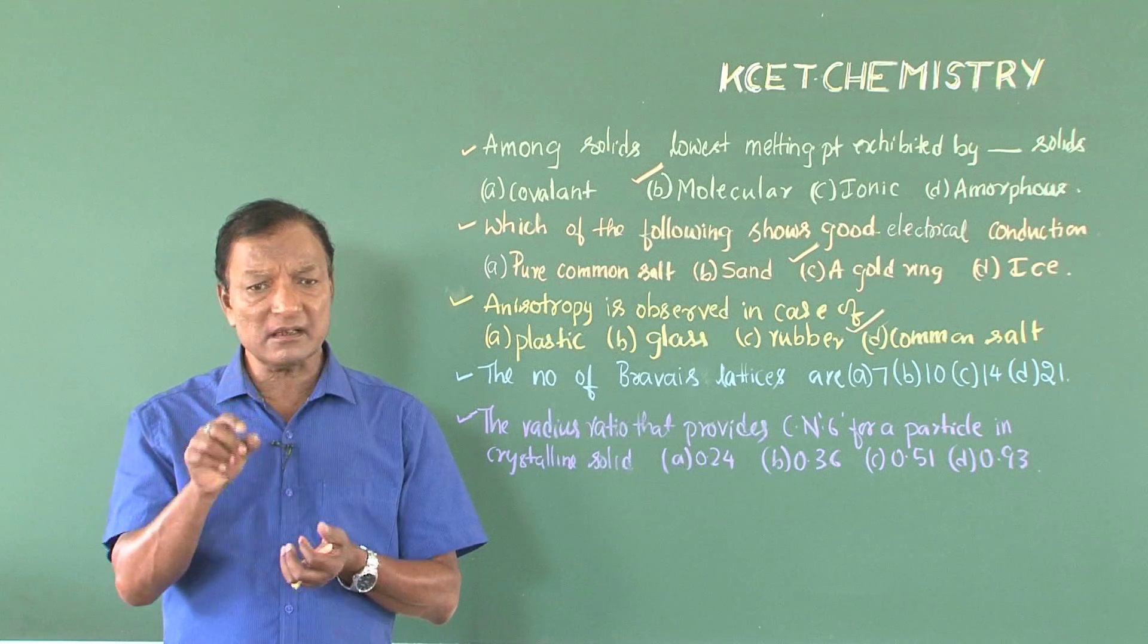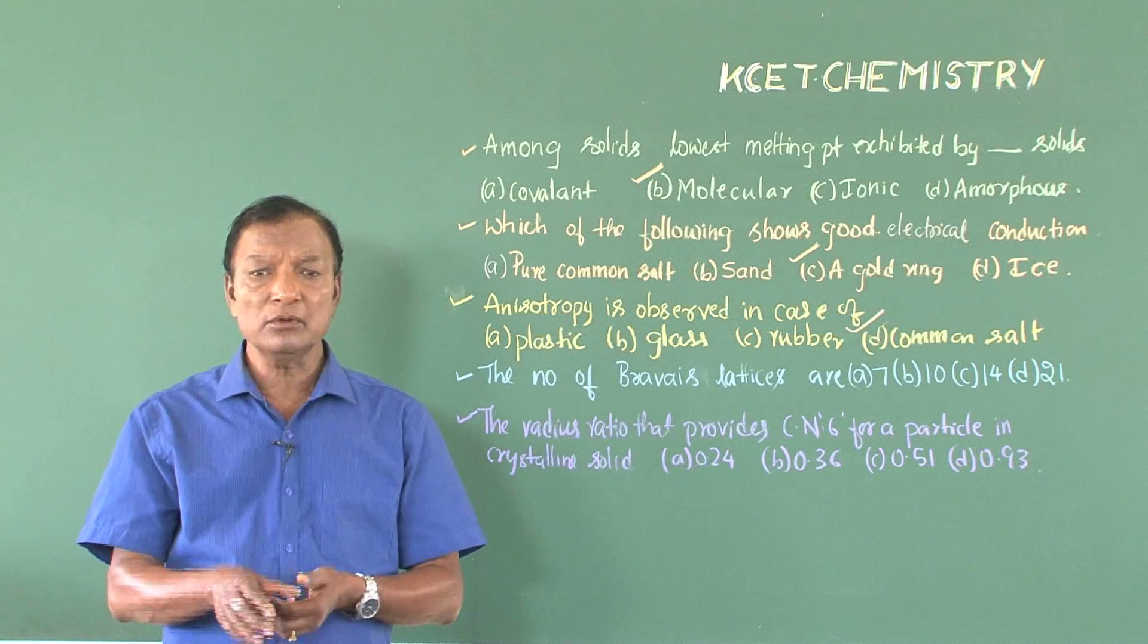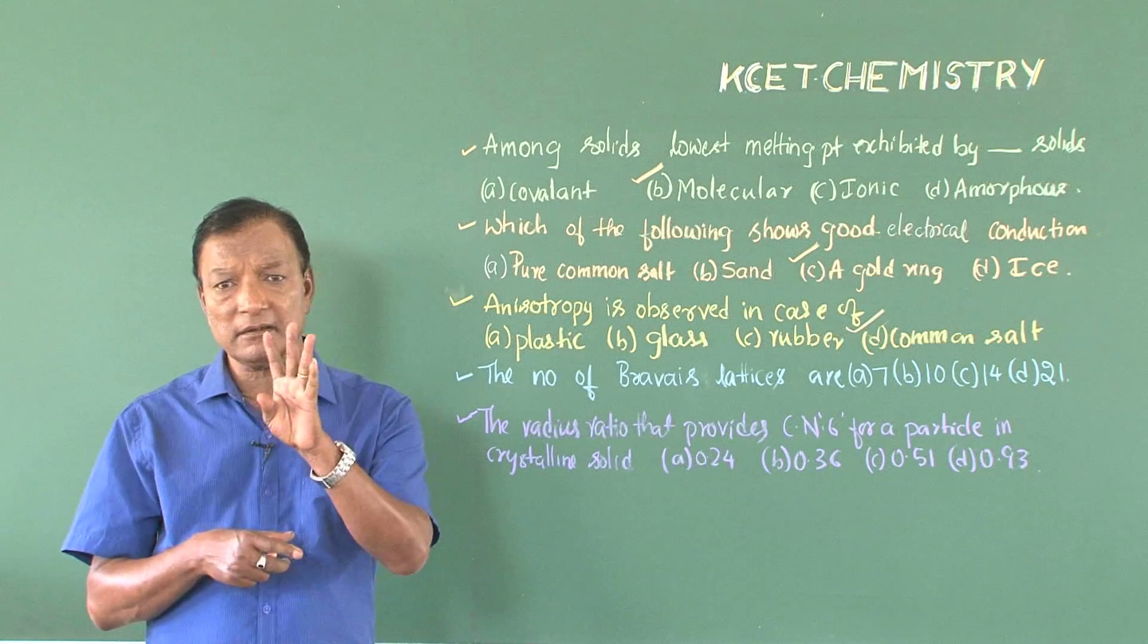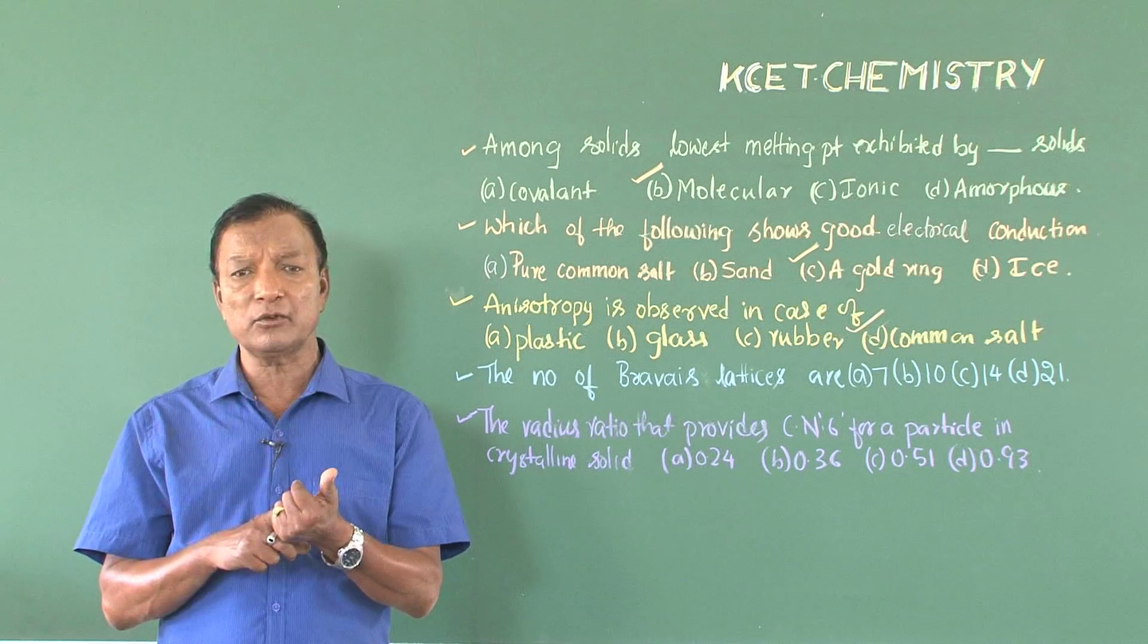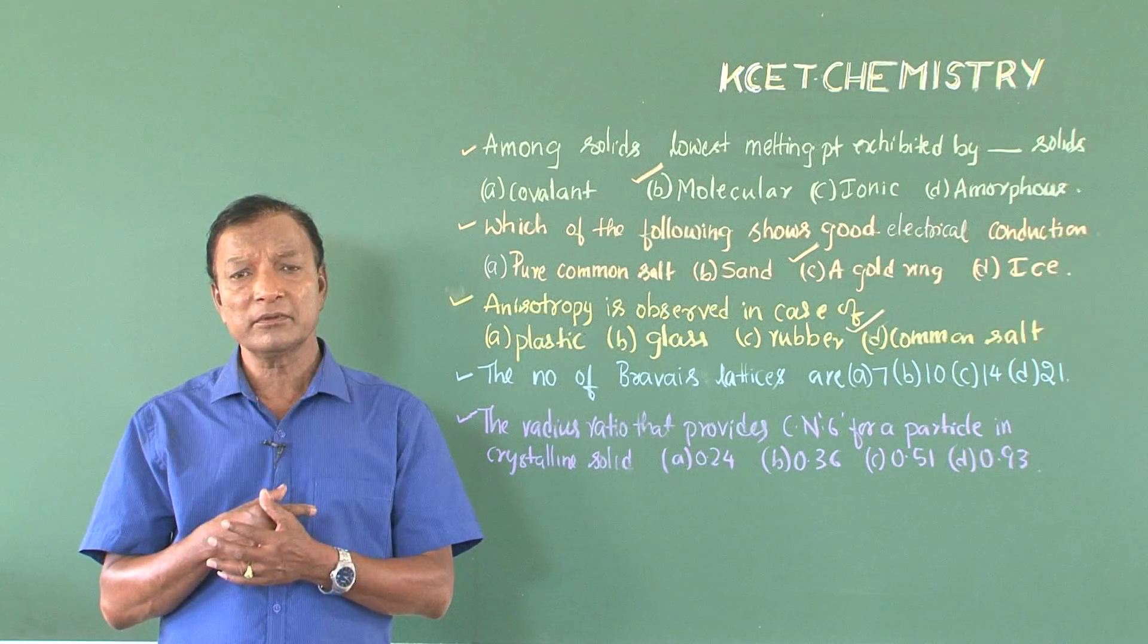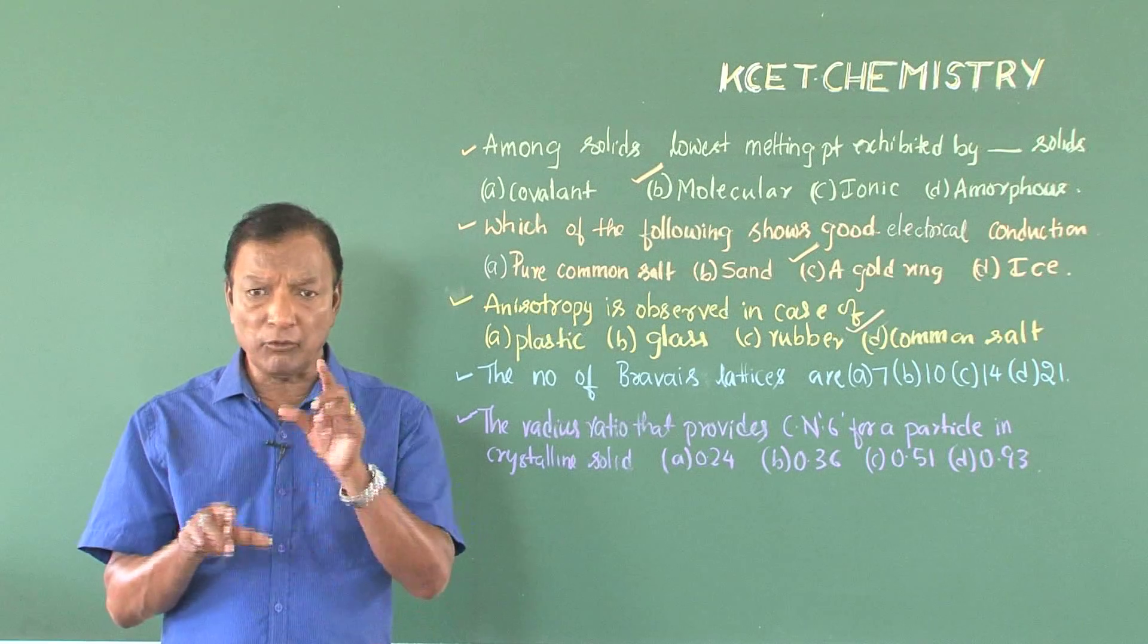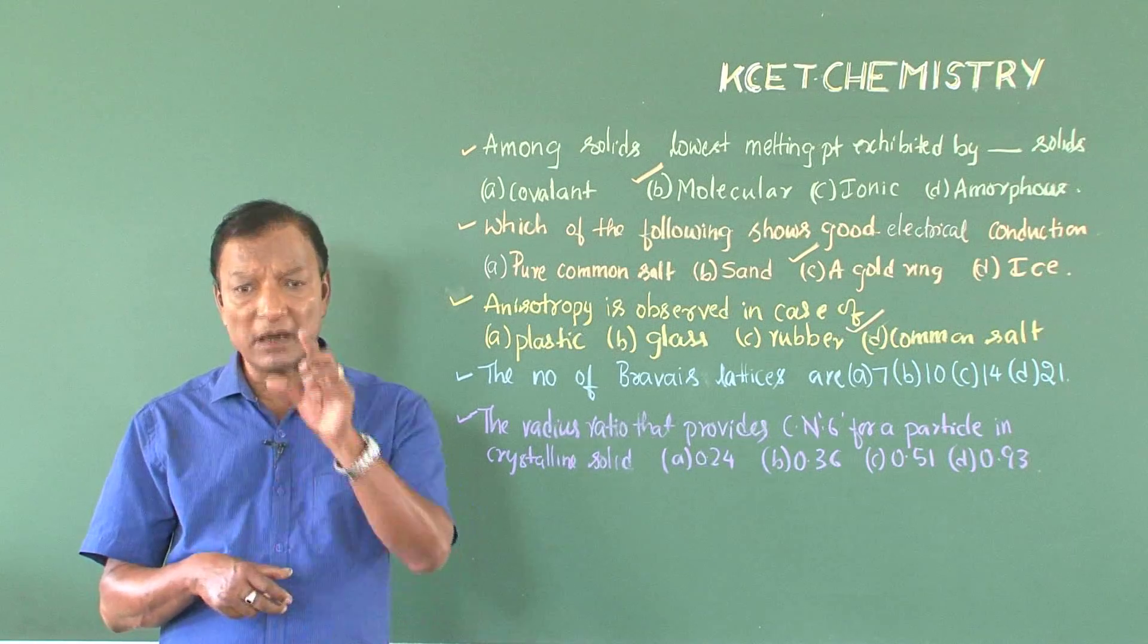And these seven crystal systems are further subdivided into spatial lattices. For example, the cubic unit cell has four types like simple cubic, body centered cubic, face centered cubic, and edge centered cubic. It has four subtypes. But in some others we have one or two or even three. Therefore, totally out of the seven crystal systems, we get the 14 space lattices. And these 14 space lattices are called the Bravais lattices.